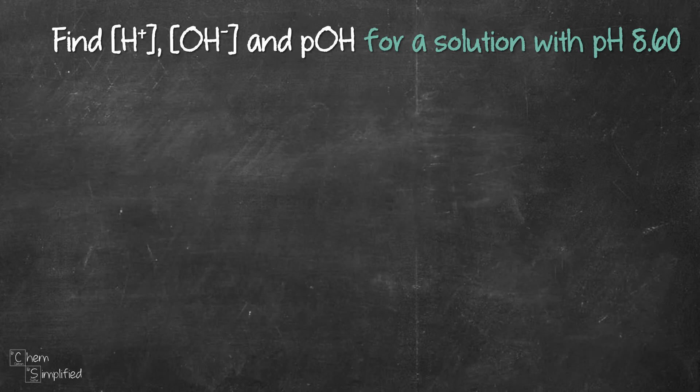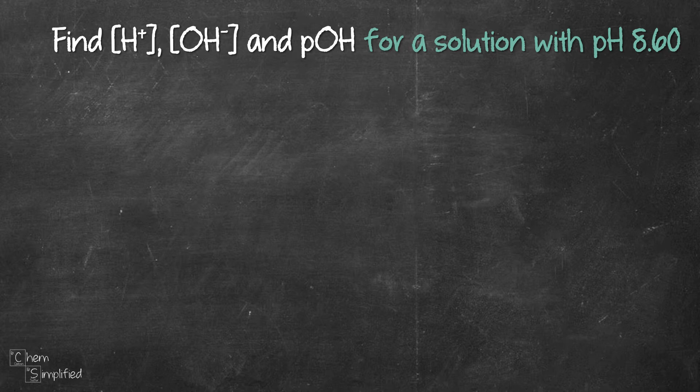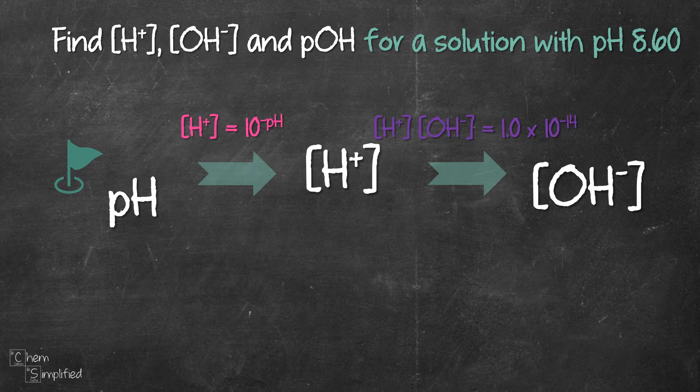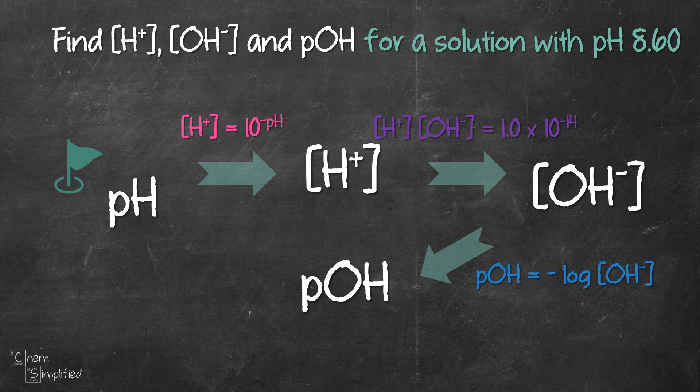To recap, here's the strategy we use to calculate the values for H+, OH-, and pOH. We started from the given pH and found the value for H+ concentration, and from the H+ concentration we found the value for OH- concentration. From that value we found the pOH, and in fact, that's not the only way.